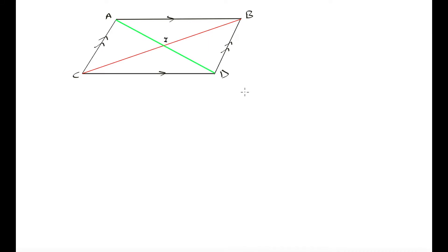How can we prove this? We know that opposite sides of this parallelogram are parallel, so we can think of the diagonals as transversals. We have two transversals cutting through our parallel lines, and from previous videos we know that parallel lines cut by transversals create special angles: alternate interior angles, corresponding angles, and co-interior angles.